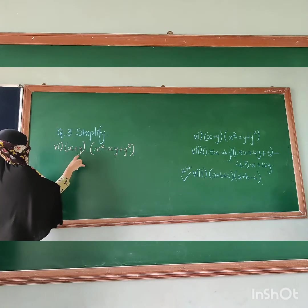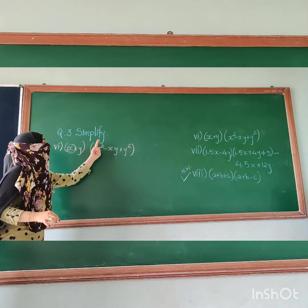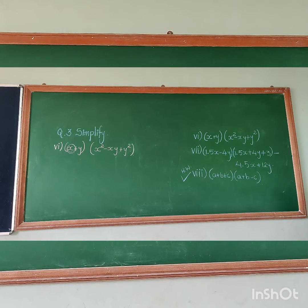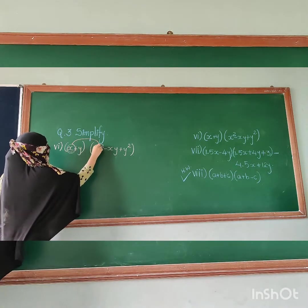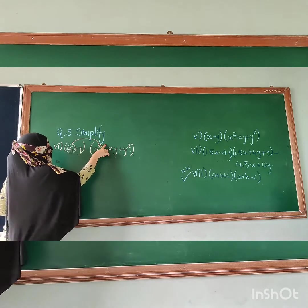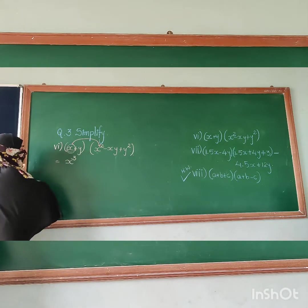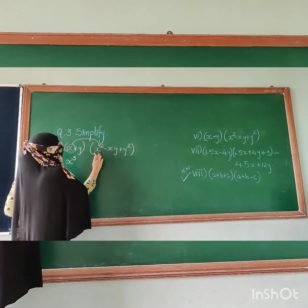From this first bracket, we will take the first term. We will multiply this first term with the next bracket and whatever terms are in the next bracket. The first term is x. So x will be multiplied with the remaining ones. x multiplied by x gives x squared — since x and x are the same variables, powers add: 1 plus 2 equals 3. So it is x cubed. We have multiplied x with all terms in this bracket.